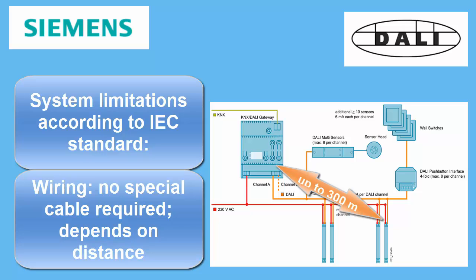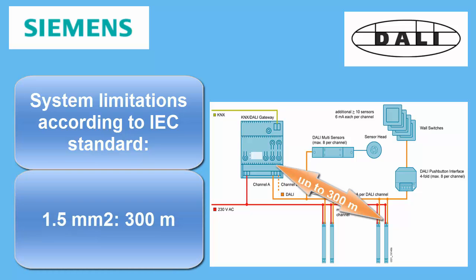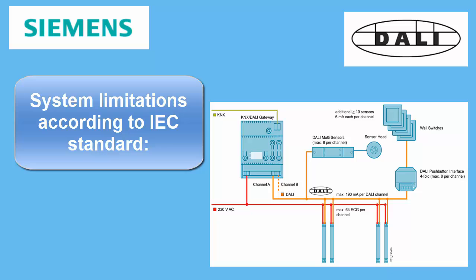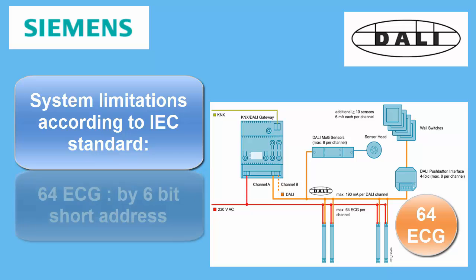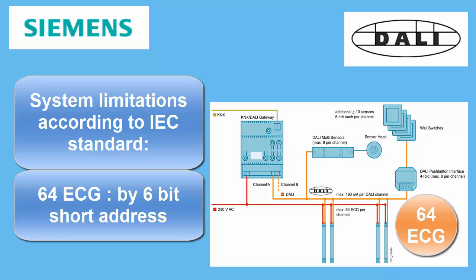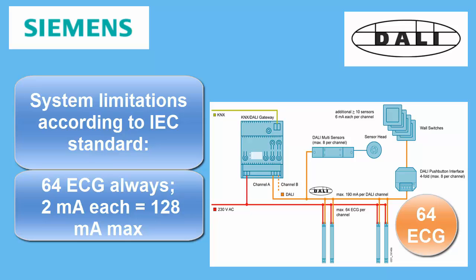The maximum range of 300m can be obtained by using 1.5 mm² cable cross-section. The maximum number of ballasts on a DALI line is 64, represented by the 6-bit short address. There is no reduction in the number of ballasts for reasons of high current consumption, since the DALI standard requires ballasts not to exceed 2mA per ballast. Therefore, you can always use 64 ballasts per line.